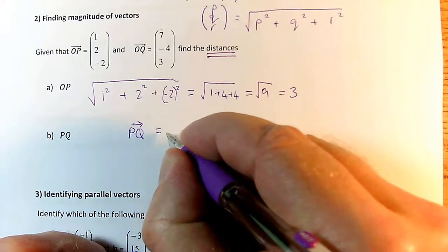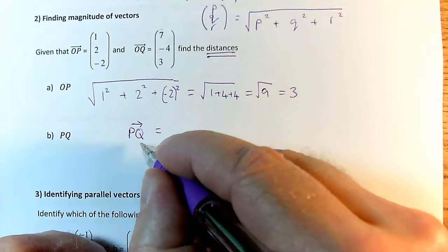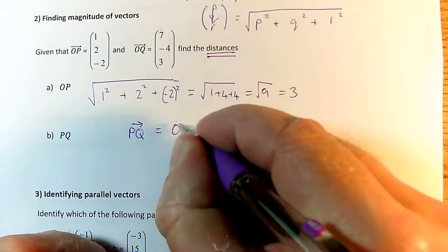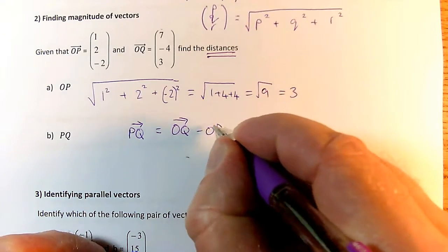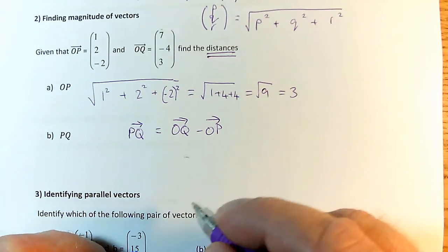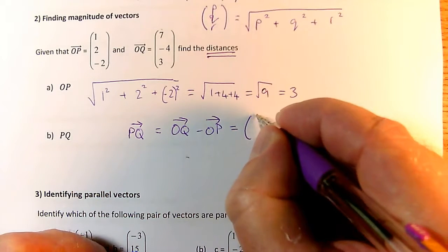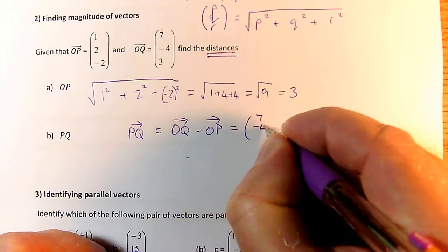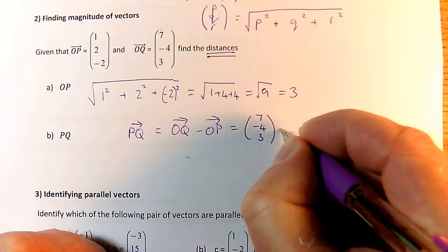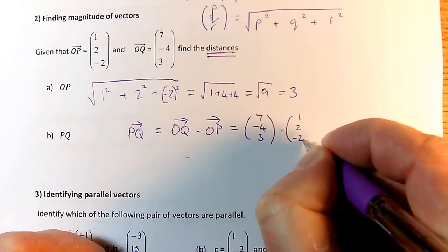OK, so that is the recipe for the vector. The vector from P to Q is OQ minus OP. So that's like we did in the previous example. OK, so I've got to subtract these two vectors in the correct way around. So this is 7 minus 4, 3, minus OP, which is 1, 2, minus 2.